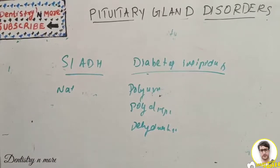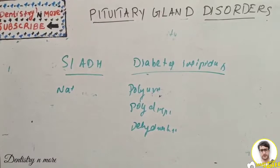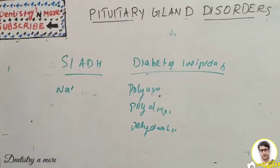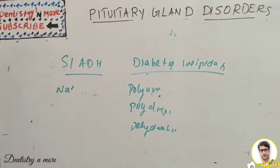That covers posterior pituitary problems: SIADH and diabetes insipidus. We have completed pituitary gland disorders in brief. Cushing's disease, acromegaly, gigantism, Simmons disease, diabetes insipidus, and dwarfism are all very important topics that may be asked as short notes or short essays, and pituitary gland disorders overall may be asked as a main essay. Thank you.